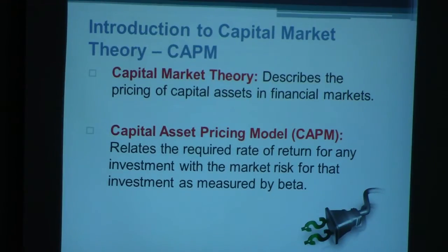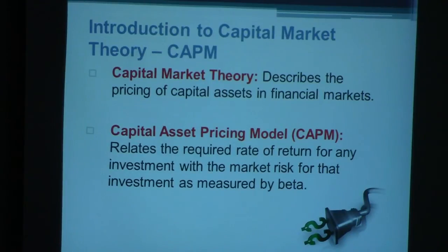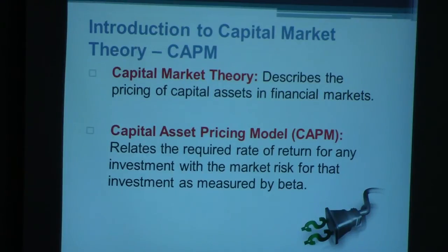At this point you may be looking at all these terms and wondering what they mean. The required rate of return implies what you are looking at an investment to return for you. A required rate of return can be looked at through different angles. Market risk implies the risks we have studied in the previous presentation, and beta we will talk about in a couple of minutes — what it is and how it relates to CAPM.